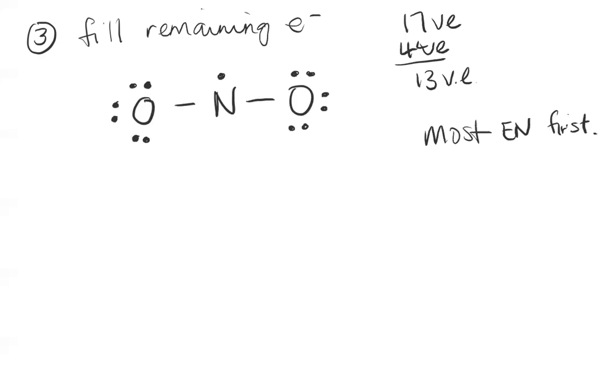Now I go through and check if I have a valid structure, the right number of atoms and the right number of electrons. Atoms - I've got an oxygen, nitrogen, another oxygen. Right number of electrons - I count them all and get seventeen, and my structure has seventeen valence electrons. That's correct, but it's not the best structure.